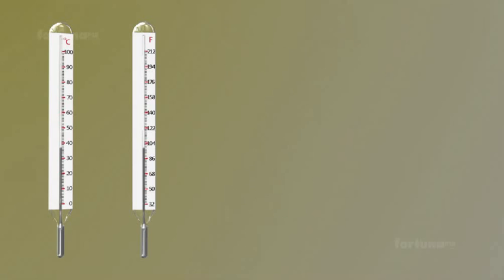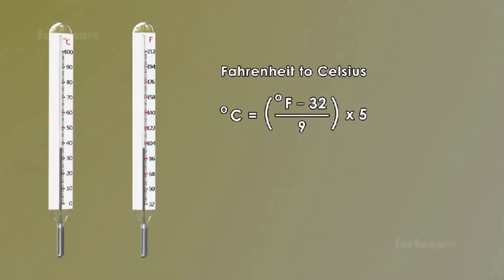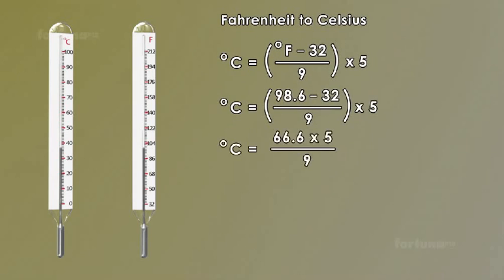We can convert the Celsius scale into the Fahrenheit scale using the equation. C is equal to F minus 32 whole multiplied by 5 divided by 9. We just plug 98.6 for F and solve. This will give us 37 degrees Celsius.